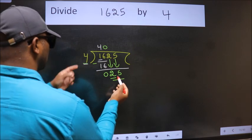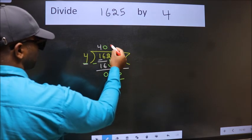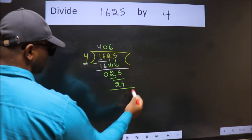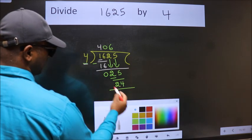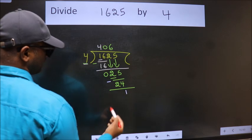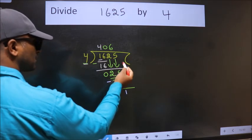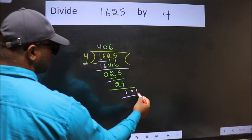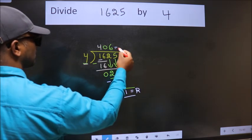A number close to 25 in the 4 table is 4 times 6, 24. Now we subtract, we get 1. No more numbers to bring down, so we stop here. This is our remainder and this is our quotient.